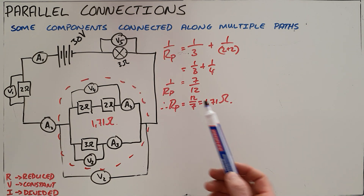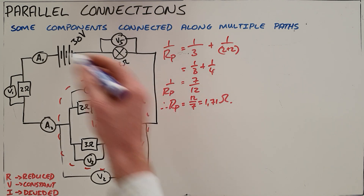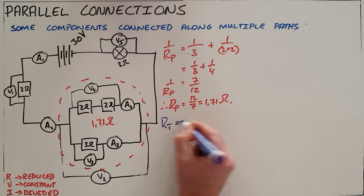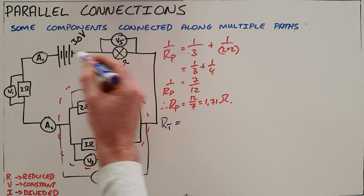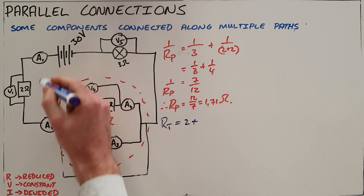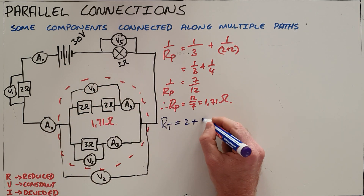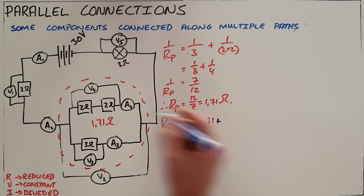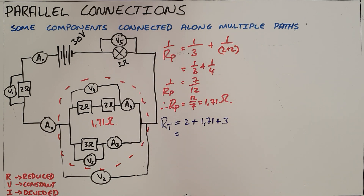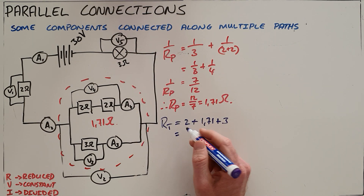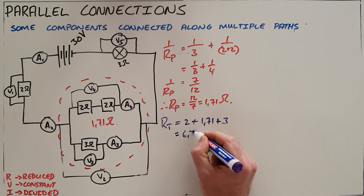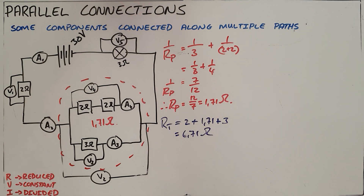Once we've done that, we can calculate the total resistance in the circuit. The total resistance, following this path, is going to be your 2 Ohm resistor plus your equivalent parallel resistance of 1.71, plus your 3 Ohm resistor. So our total resistance in this circuit is 6.71 Ohms.